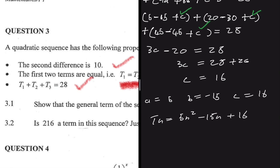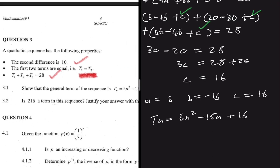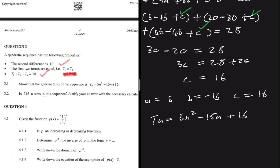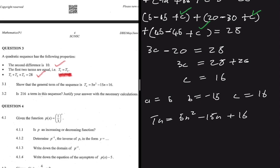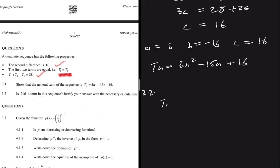Now let's do question 3.2. The question asks: is 216 a term in this sequence? Justify your answer with the necessary calculations. We know that tn equals 5n squared minus 15n plus 16. If 216 is a term in this sequence, we set tn equal to 216.